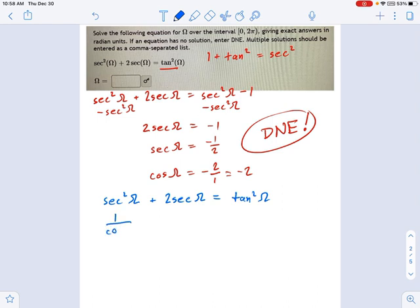I'm going to change all the secants to one over cosine. So here we have two over cosine, and here we have sine squared over cosine. Remember, that's tangent squared. And now we're going to multiply this whole thing, both sides, by cosine squared omega.